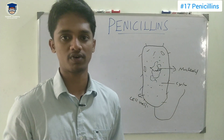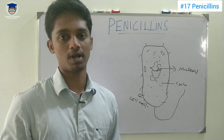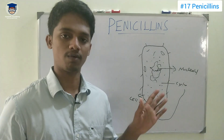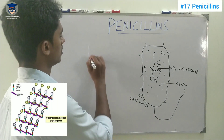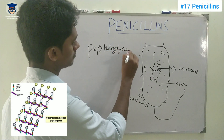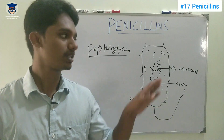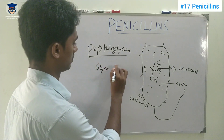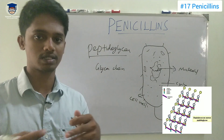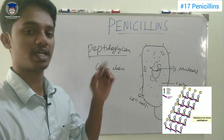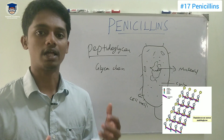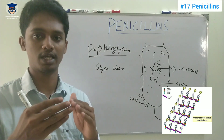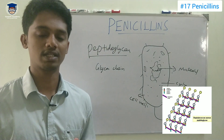If you look at the bacterial cell wall, bacteria have a much more rigid cell wall. The human cell membrane is much more flexible. The rigid cell wall is much stronger. The main component that makes up the bacterial cell wall is peptidoglycan. Peptidoglycan is the main structural component of the bacterial cell wall.